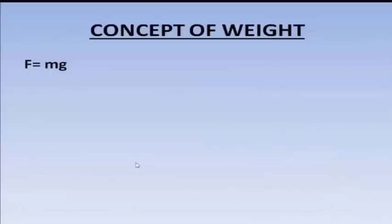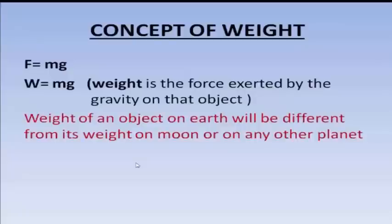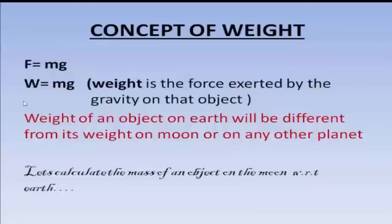Force is equal to mass into acceleration due to gravity. Weight is also the force with which the object is pulled downwards, so we can write W = m × g. The weight of an object on the earth will be different from its weight on the moon or on any other planet. On the moon the value of g will be much lesser than on the earth, so the weight W will be lesser. We can calculate what is the weight of any object on the moon compared to on the earth.